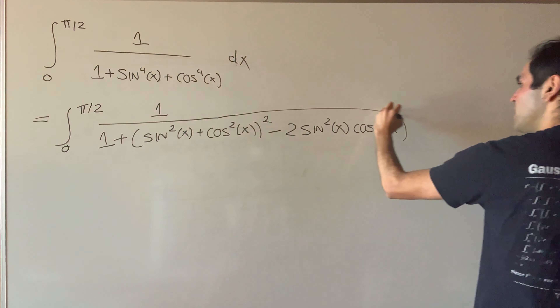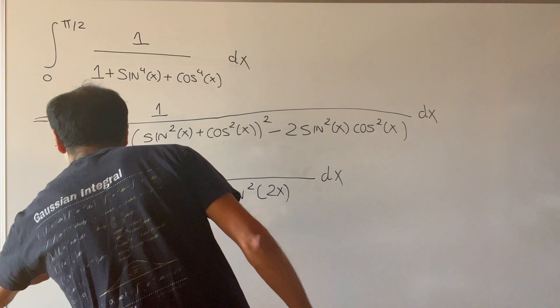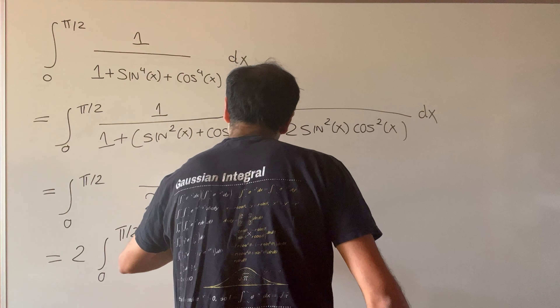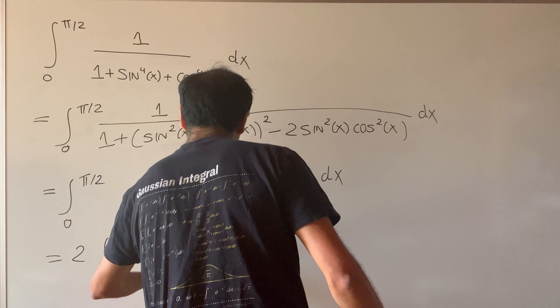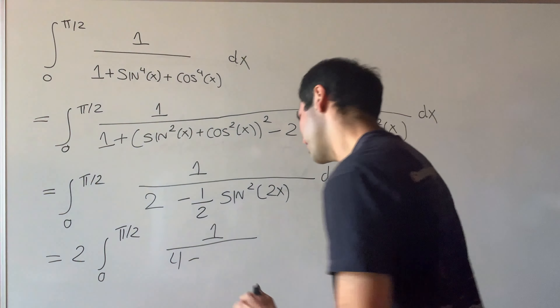Also, I would like to remind you, sine times cosine is one-half sine of two x, so this becomes minus one-half sine squared of two x dx. You can just factor out the one-half, and then you get two times the integral from zero to pi over two of one over four minus sine squared of two x dx.